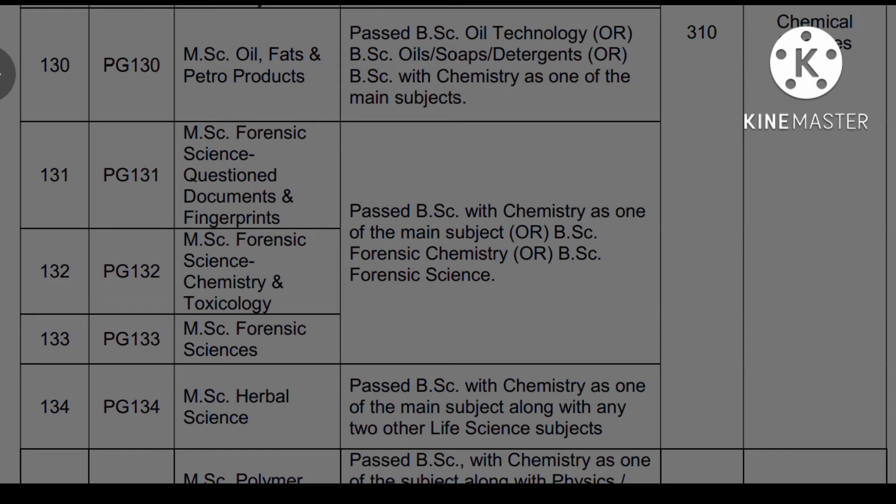And next, PG-134 — the course name is MSc Herbal Science. The eligibility is a pass BSc with Chemistry as one of the main subjects along with any two other science subjects.